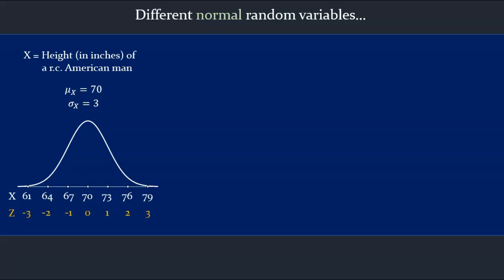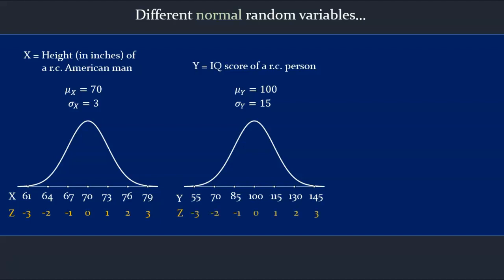Let's put up another normal random variable. Let y be the IQ score of a randomly chosen person. IQ scores are indeed normally distributed, with a mean of 100 and a standard deviation of 15 points. Thus, the y-scores on the bell are centered at 100, and the standard deviation of 15 determines the scale. If, however, we are interested not in the raw y-scores, but the standardized z-scores, then we'd have an alternative set of labels beneath our bell.